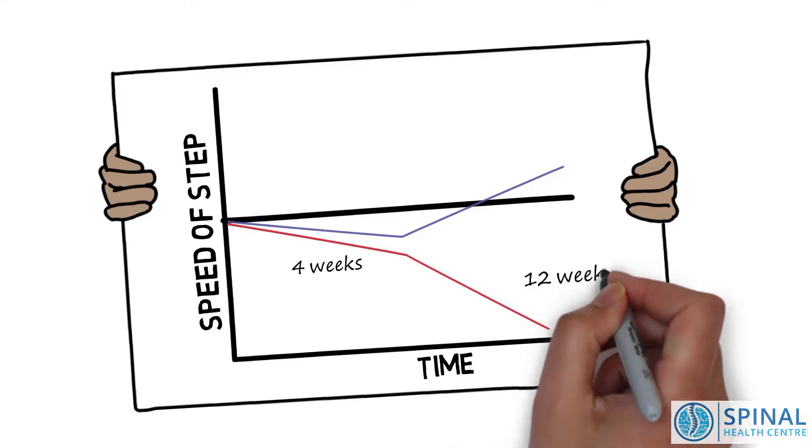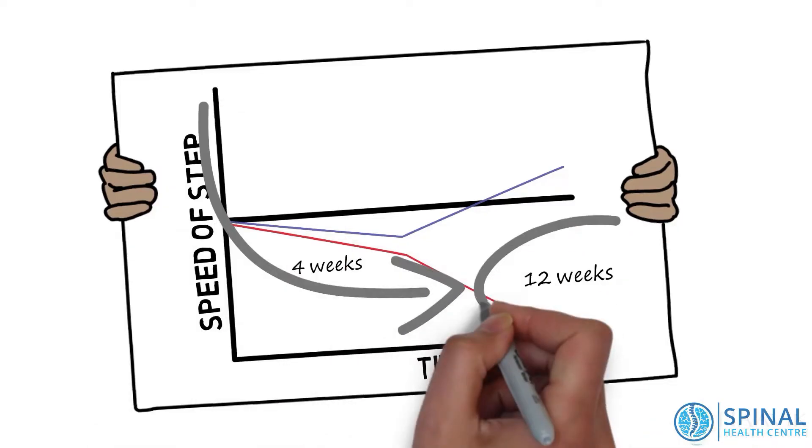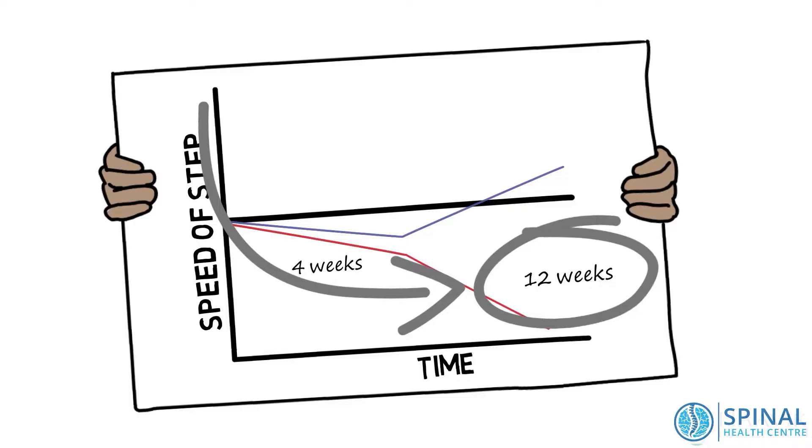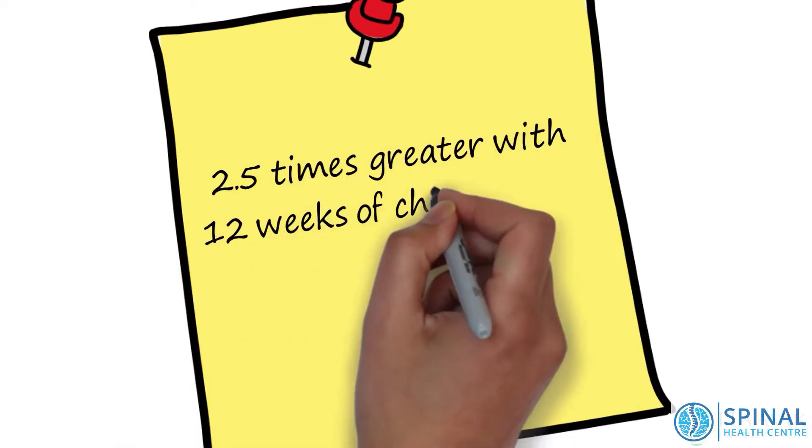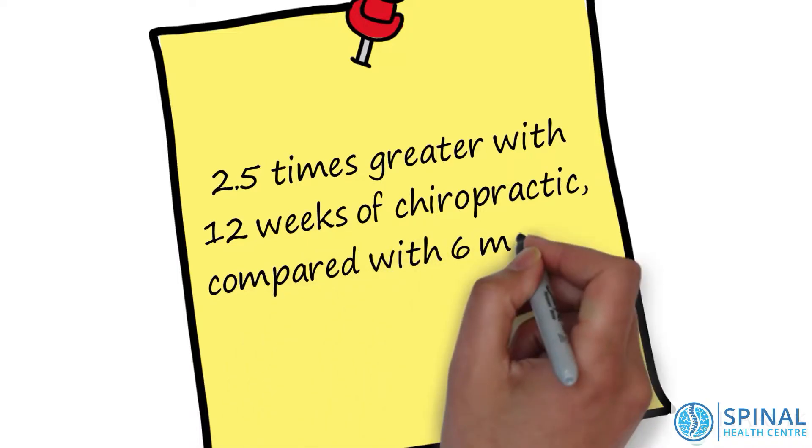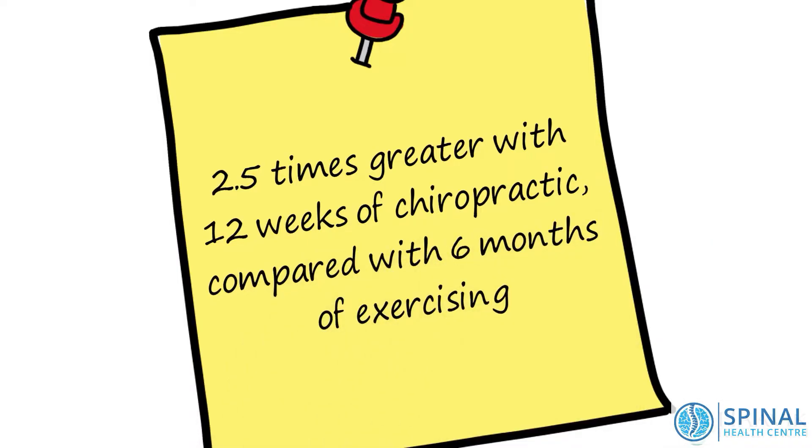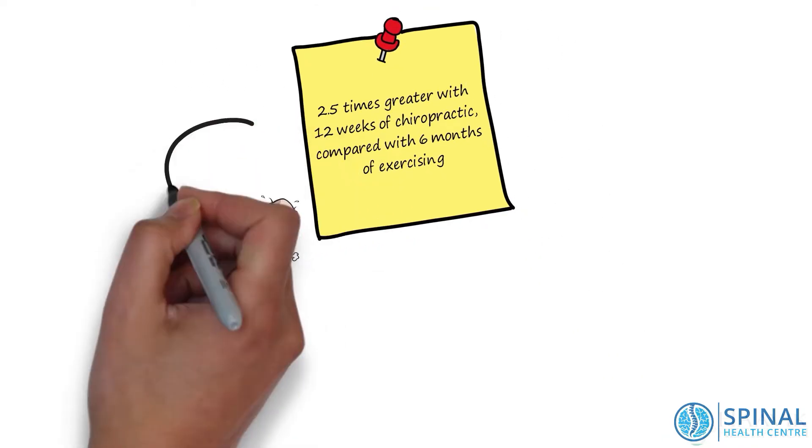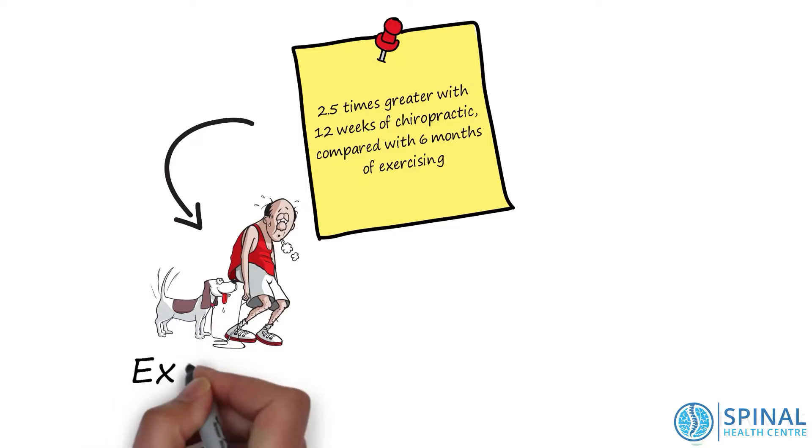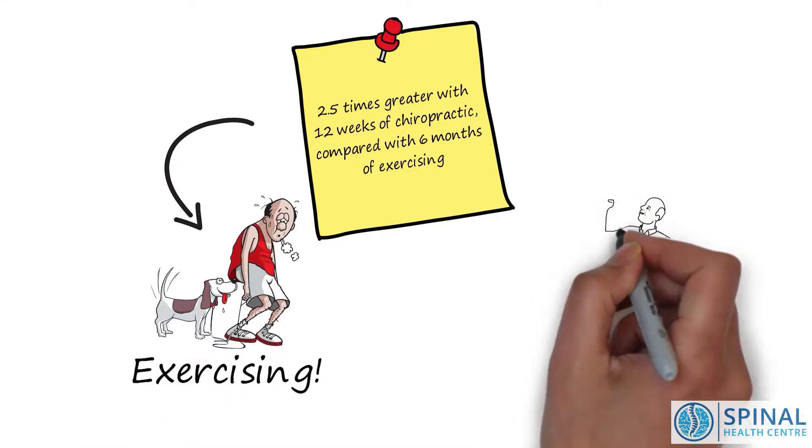But after 12 weeks, there was a dramatic significant improvement in the chiropractic group. The improvement seen in this study was actually two and a half times greater than a large clinical trial that looked at the effects of six months of exercise on the same stepping task. Being able to take a fast step is really important because researchers have shown that people who are quicker at taking a step are less likely to fall.